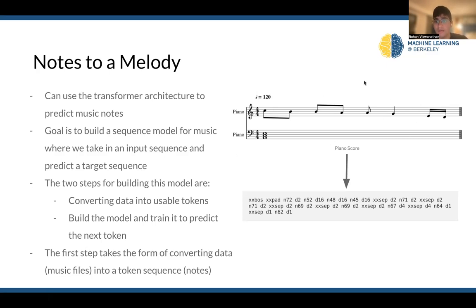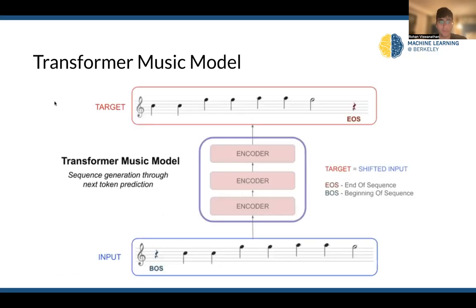The first step is converting music files into a token sequence of individual notes. With an image, you can flatten your pixels. With text using a model like BERT, you can create a 768-feature-dimension vector that can be passed into any models you're training. Music is a little bit different — there's a time series you're not able to perfectly capture. What beat are my notes on? Is this an eighth note, chord note, half note? What type of time signature am I in? What key am I in? There are a lot of considerations that need to be made.